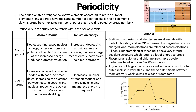So firstly, looking at periodicity. The periodic table arranges the known elements according to proton number. Elements along a period have the same number of electron shells, and all elements down a group have the same number of outer electrons, which is indicated by the group number. So for example, in group 1, there is one electron in the outer shell. Periodicity is the study of the trends within the periodic table.